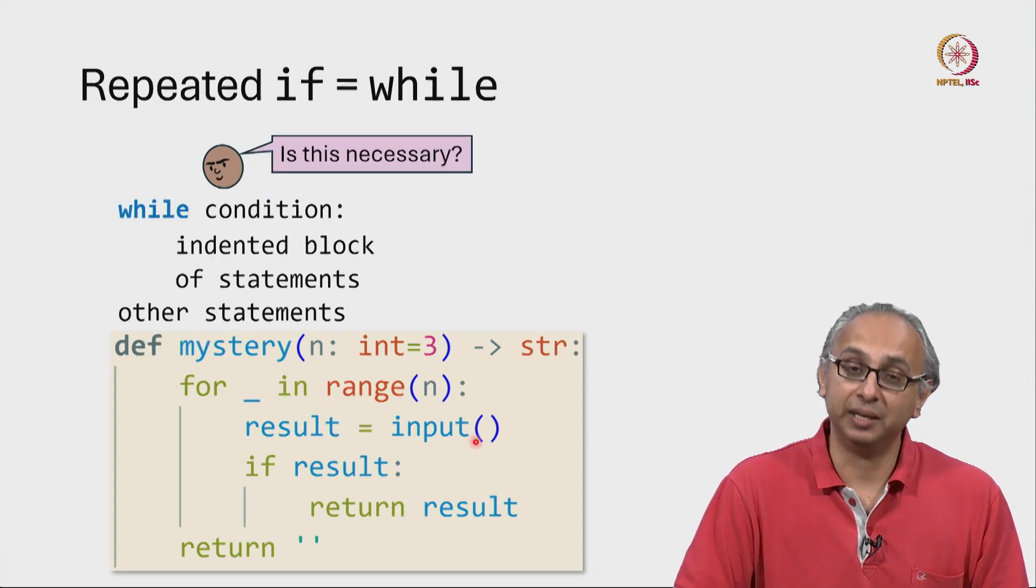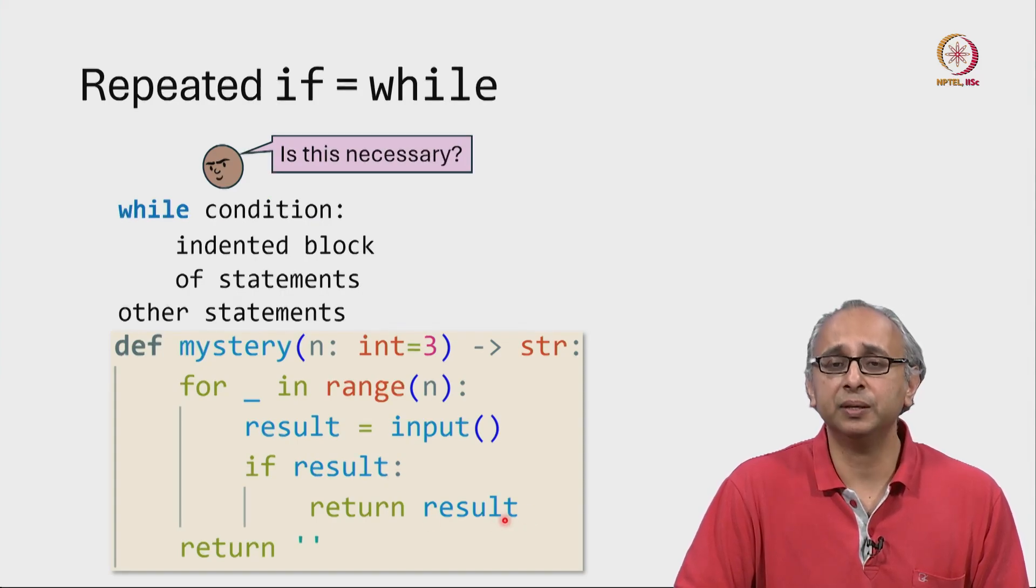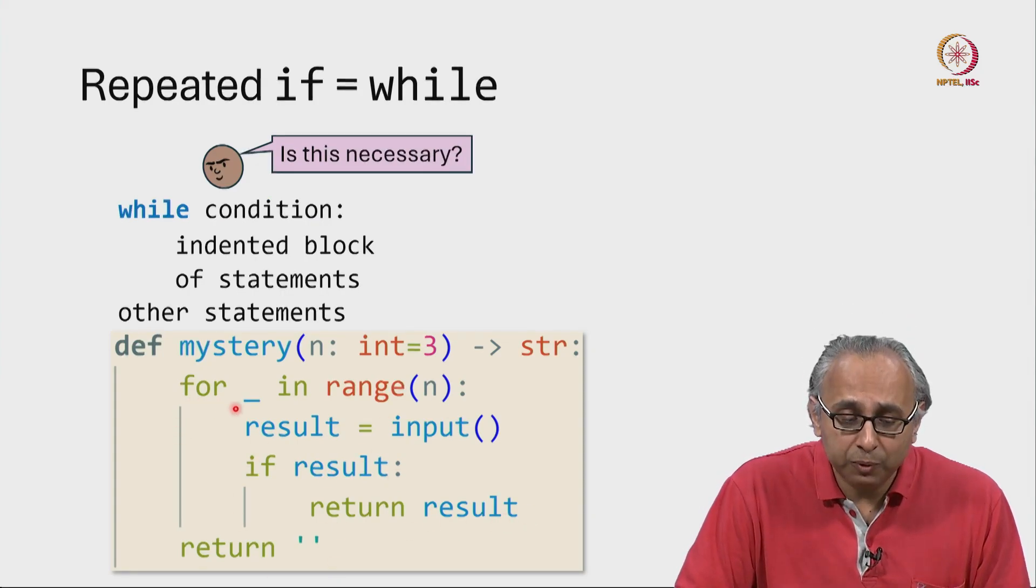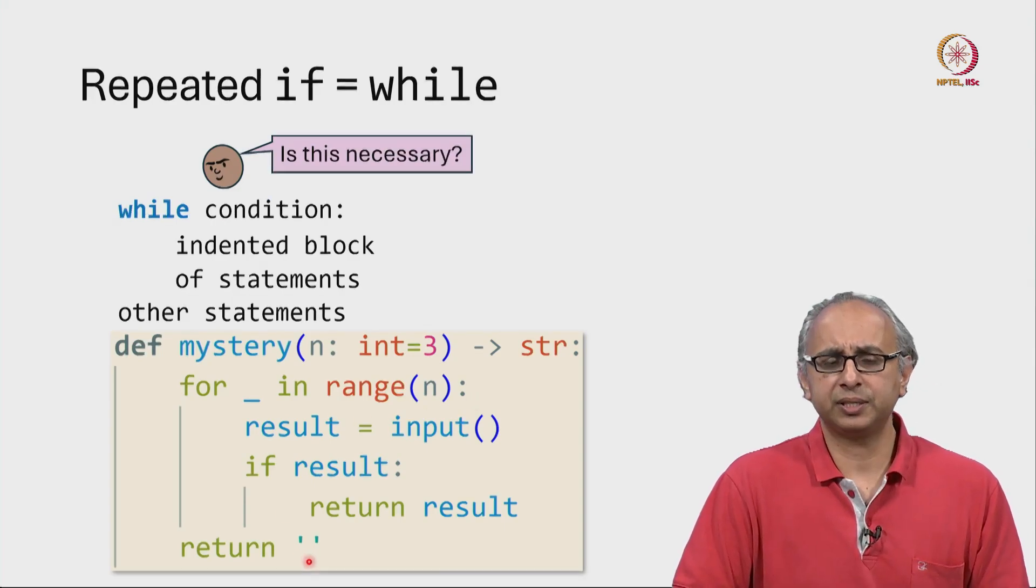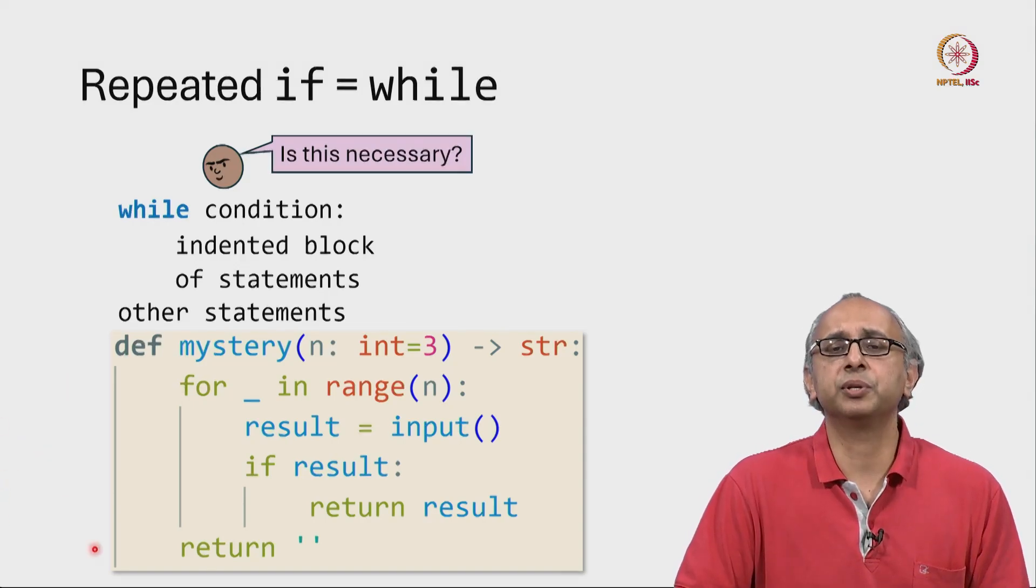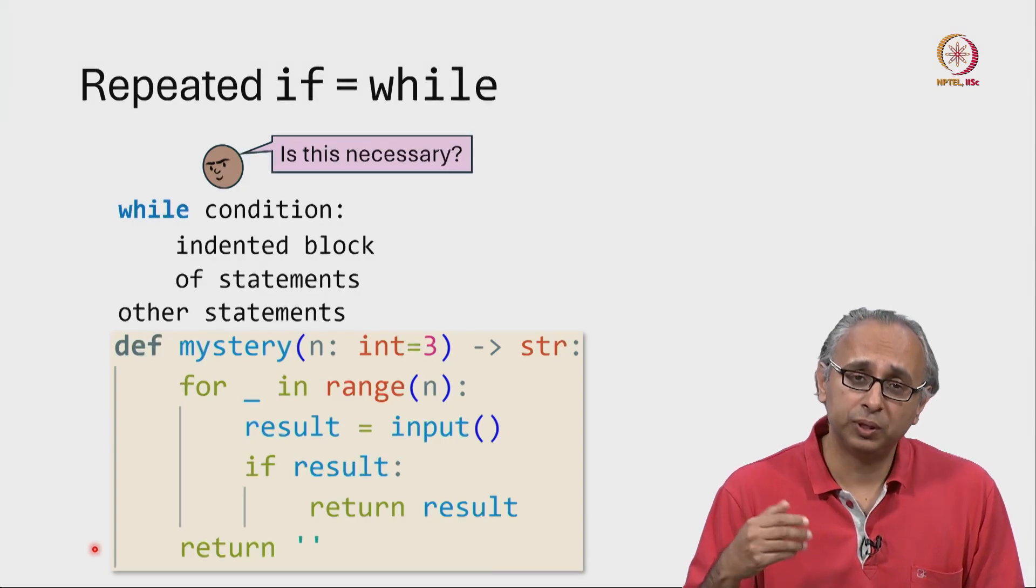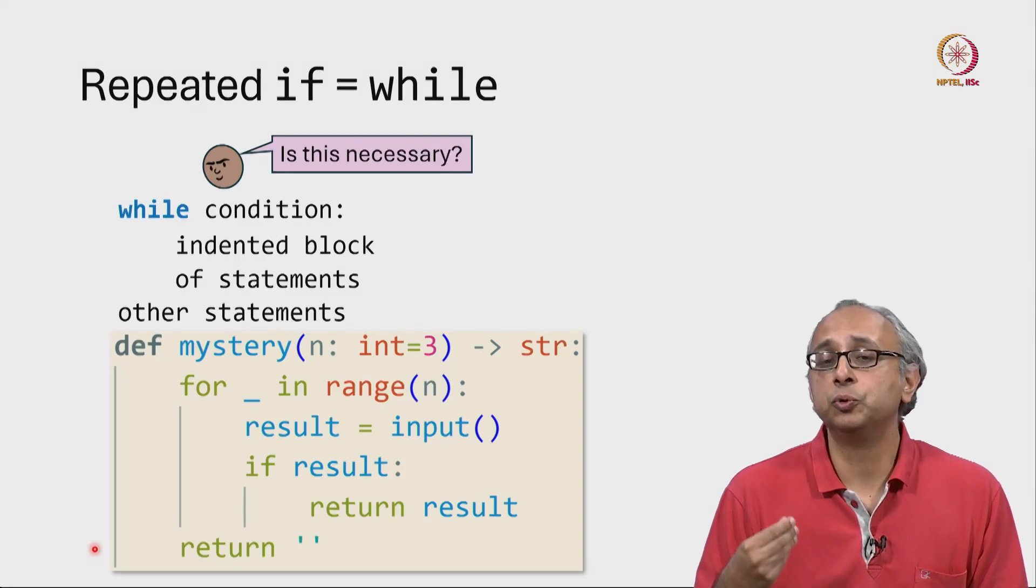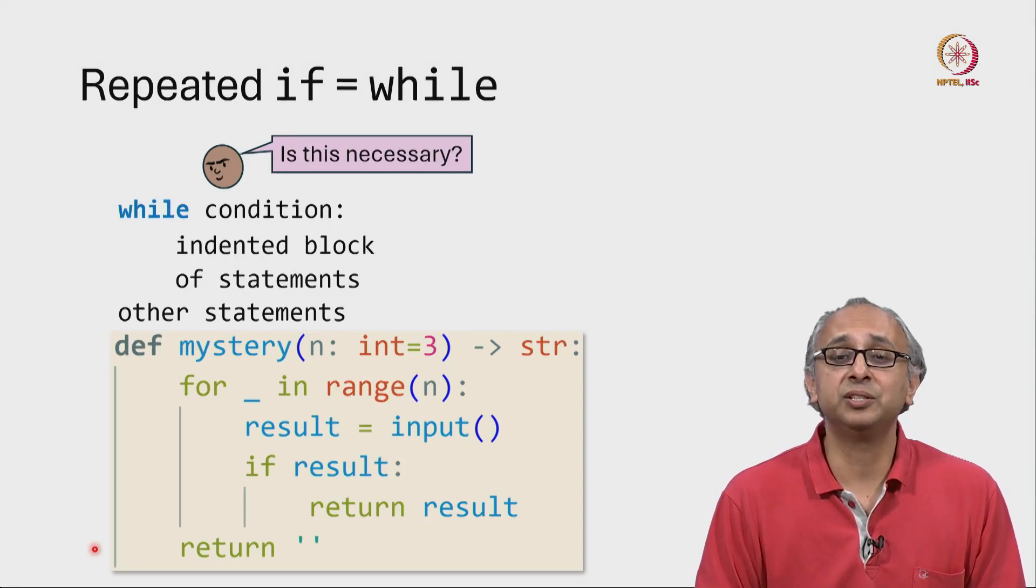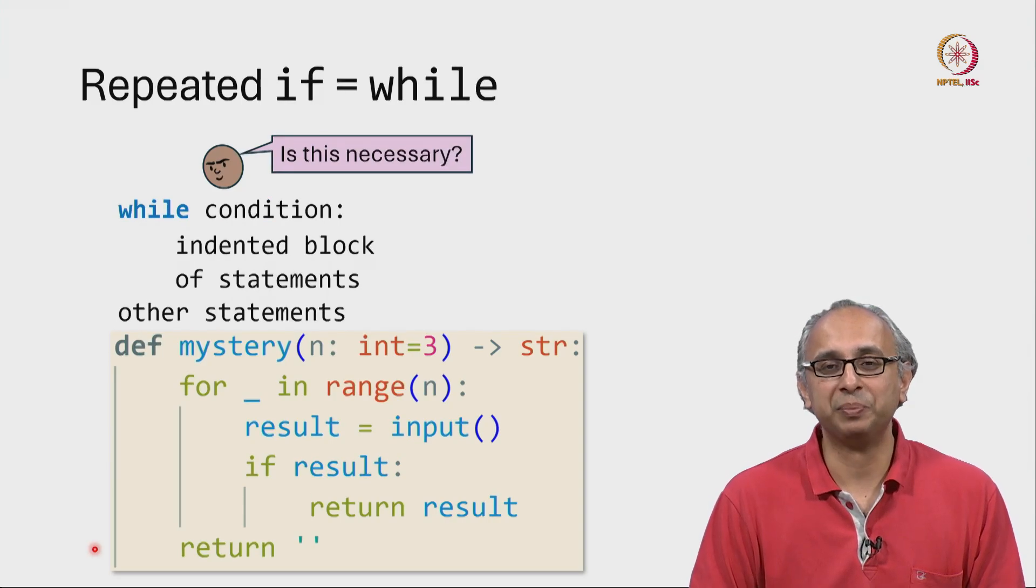So n times we will read the input and if that input is non-empty, if that string is truthy, then we will return it. And otherwise we will continue trying again. And when we run out of inputs to try, then we will return the empty string. So our friend is saying, well why do we need a while statement? We can certainly do this with a for loop. And yes, when you can write code with a for loop, I strongly encourage you to do that. It often leads to code that is easier to read and easier to maintain. But we will also see there are examples when a while loop is necessary. Let's now take a look at those examples.